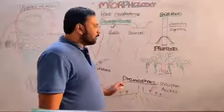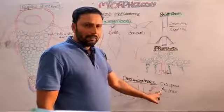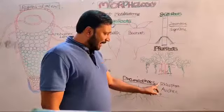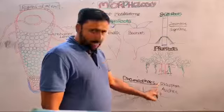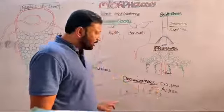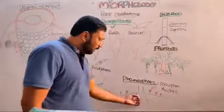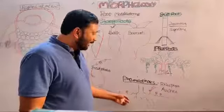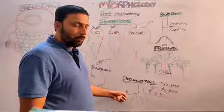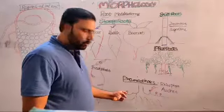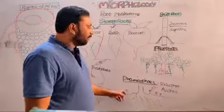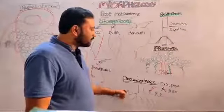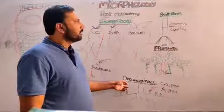Pneumatophores — examples are Rhizophora and Avicennia. These are mangrove plants growing in marshy soils. Some special adventitious roots grow negatively geotropic, which contain pores called pneumatophores, helpful for exchange of gases.